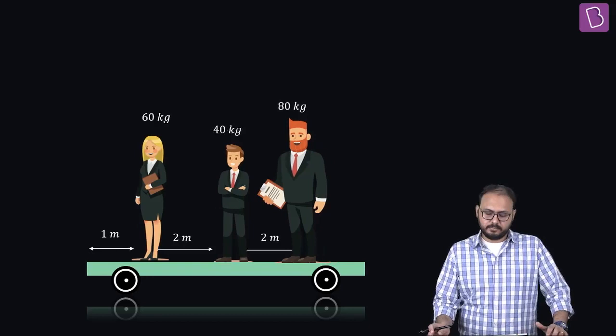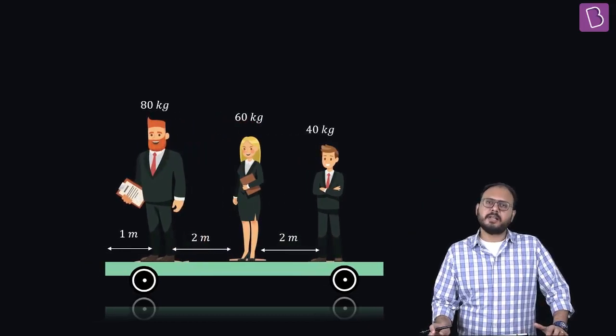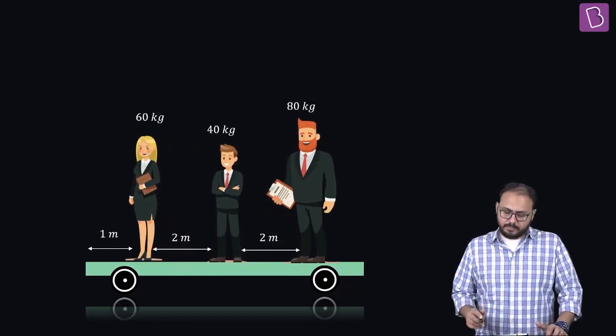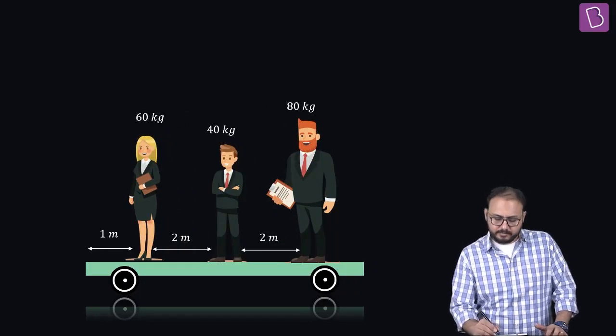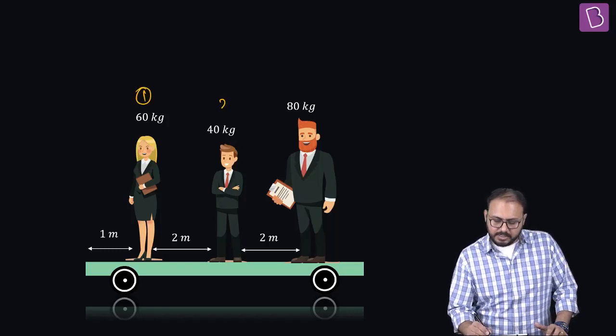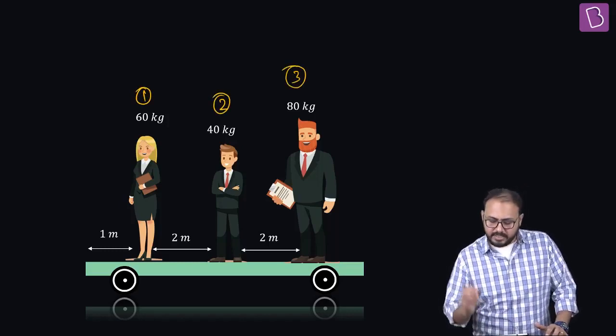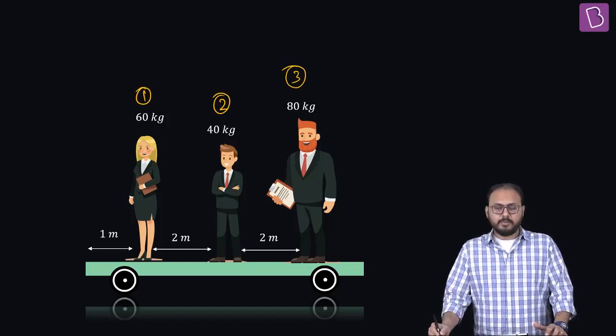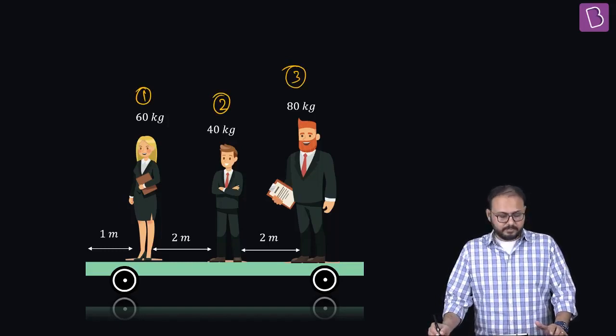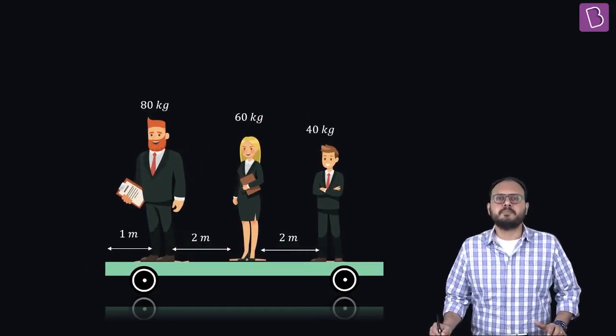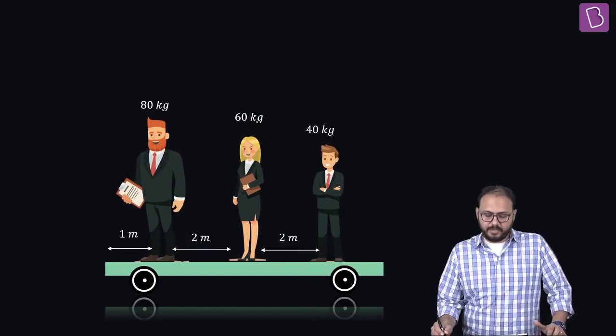This is initial, this is final. In other words, person one went two meters right, person two went two meters right, and person three went four meters left.